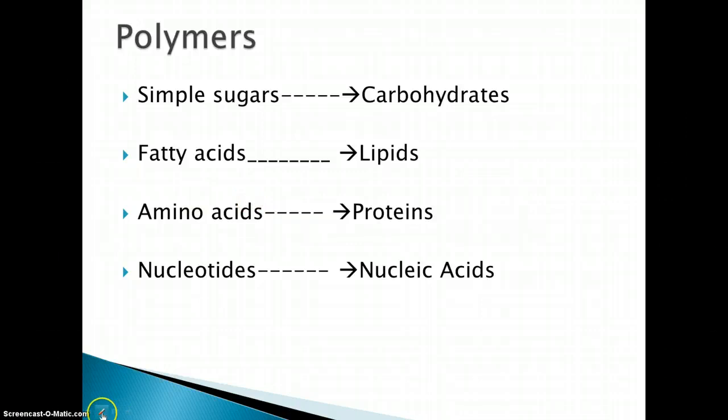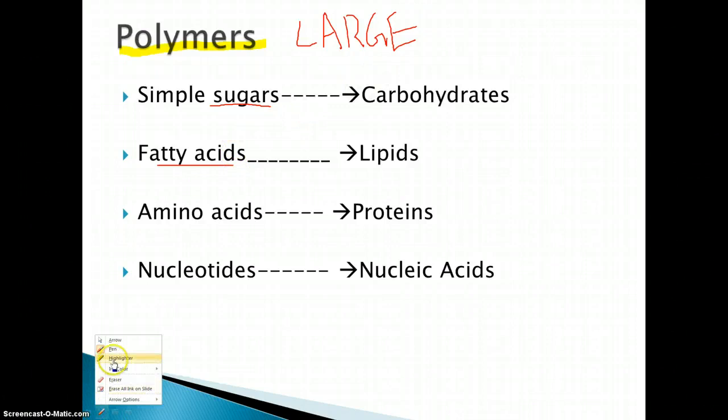Now here we have polymers. These are large structures that have hundreds to thousands of carbons and hydrogens and oxygens and so on. So these are large. And what they do is they're just linked, they're small simple sugars linked or small fatty acids linked together. And what they make are four important terms. And we'll cover each individual one.